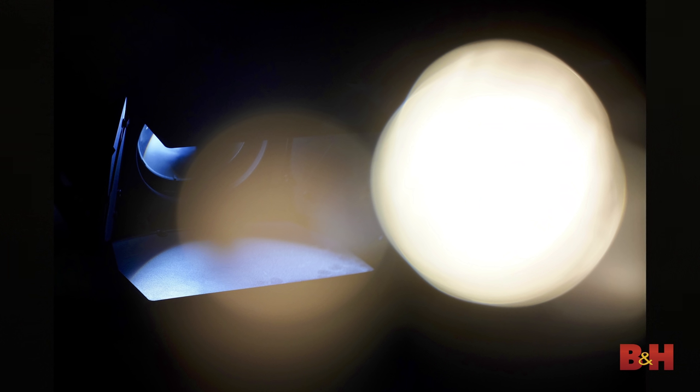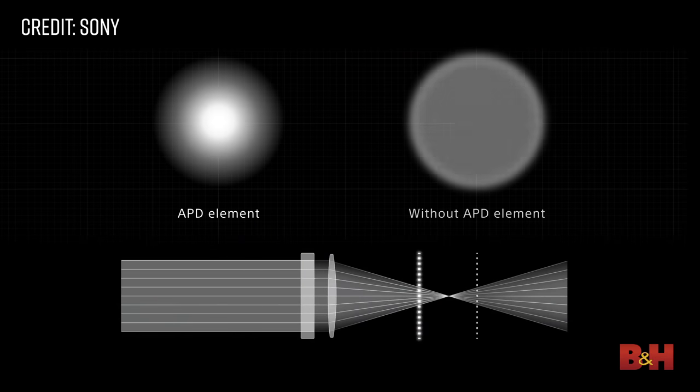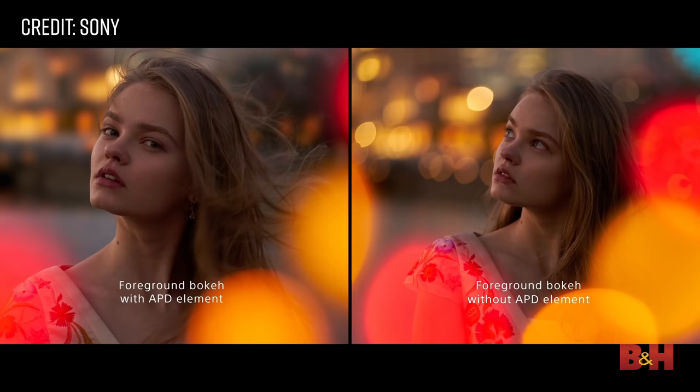Apodization is a light filtering process that changes the quality of bokeh by smoothing the edges in the out-of-focus areas. This is done gradually, gently reducing light transmission through the lens with maximum penetration at the center and progressively limiting light as you move towards the edges. Unlike the linear breakdown of a neutral density filter, apodization gradients work on a radial.